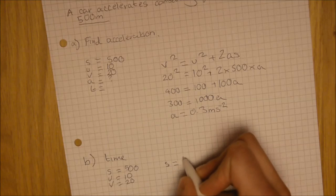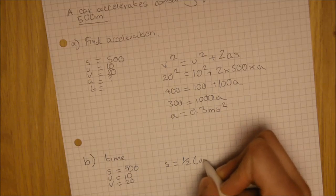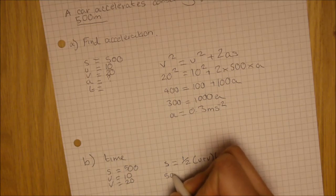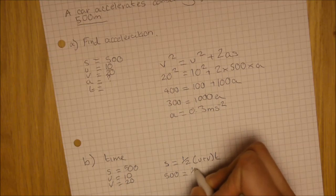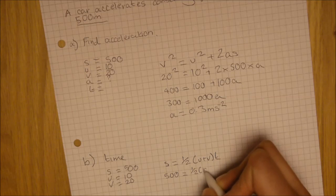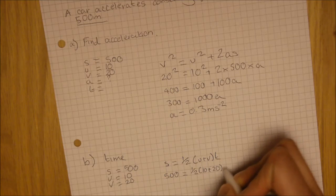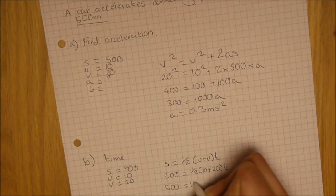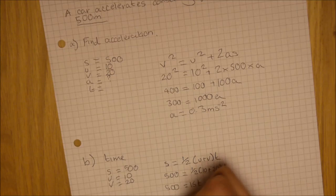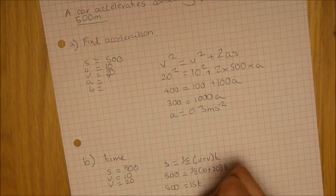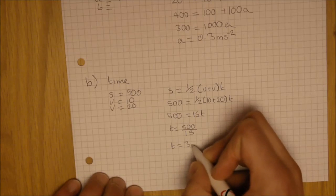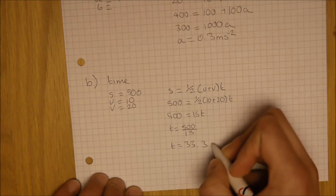I'm not going to use the 0.3 because I don't think I should. So, we're going to use S equals half U plus VT. So, we know that it's 500 equals half of 10 plus 20T. So, it's 500 equals 15T. So, therefore, T equals 500 over 15. T is 33.3 seconds.